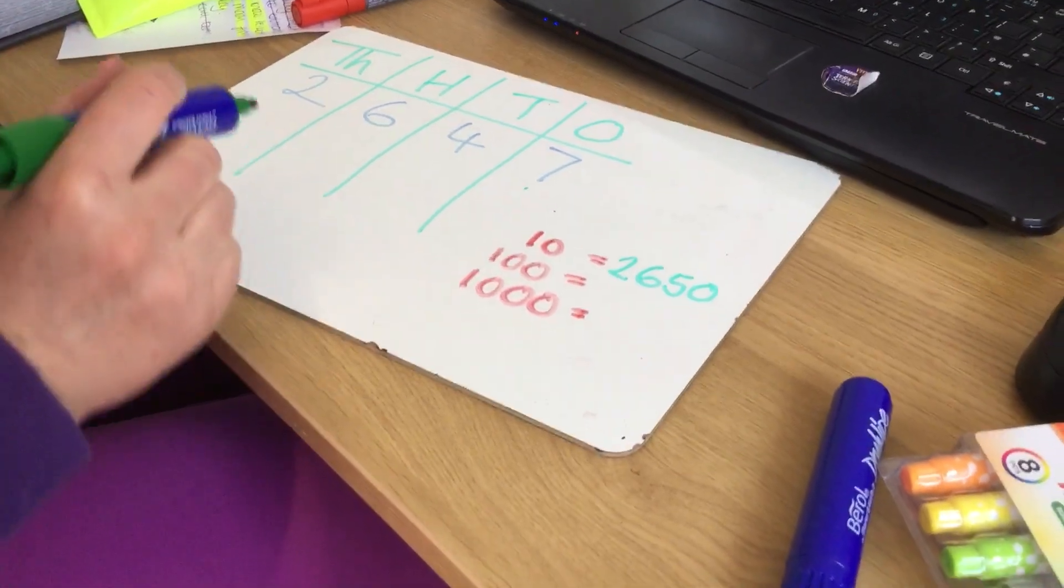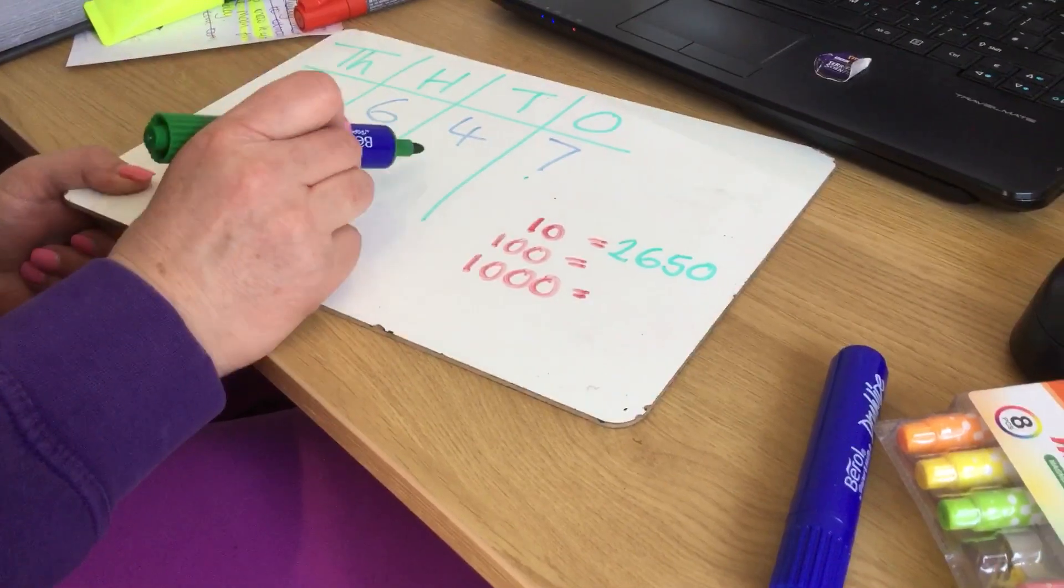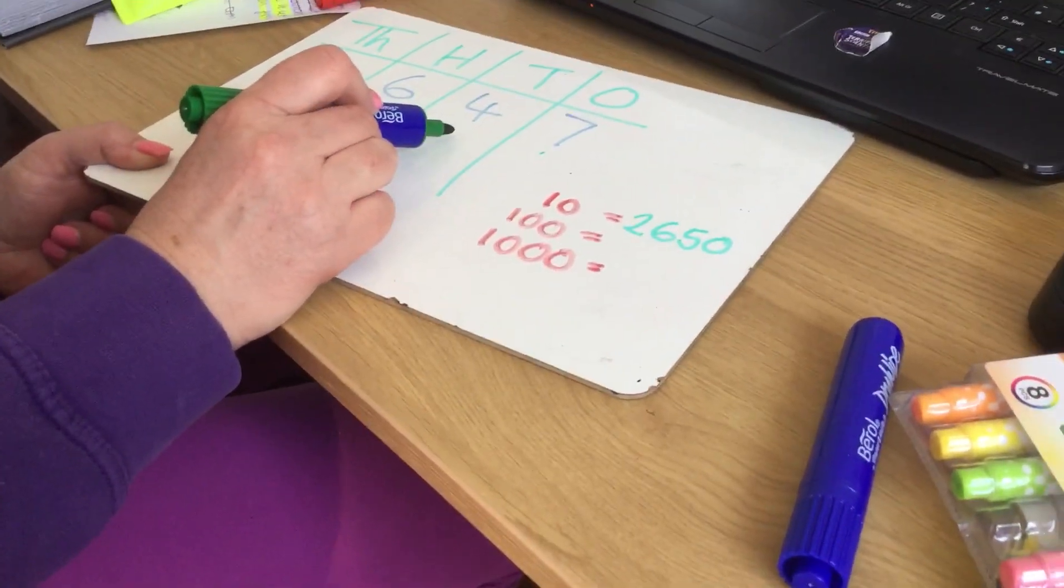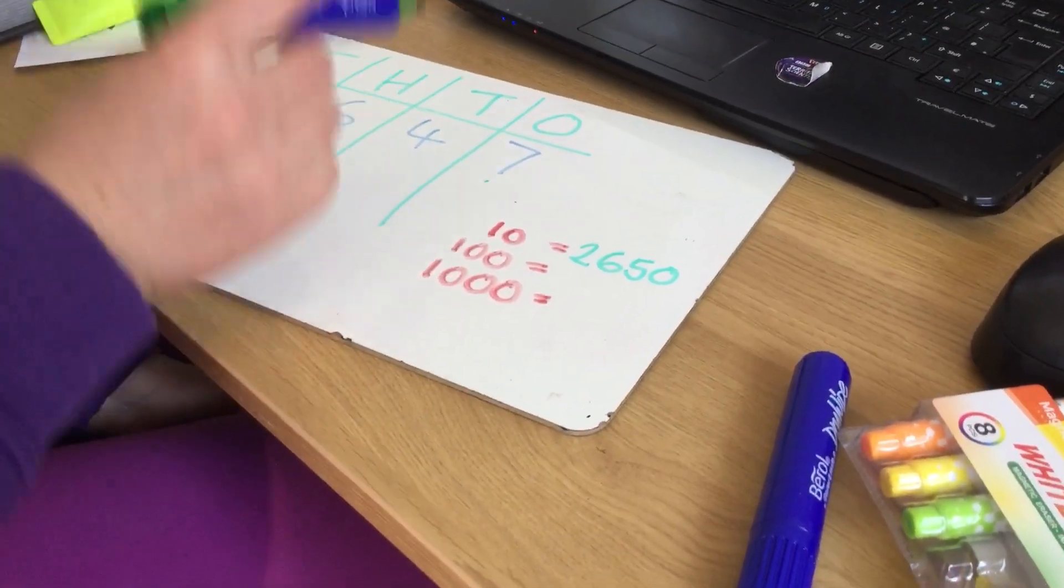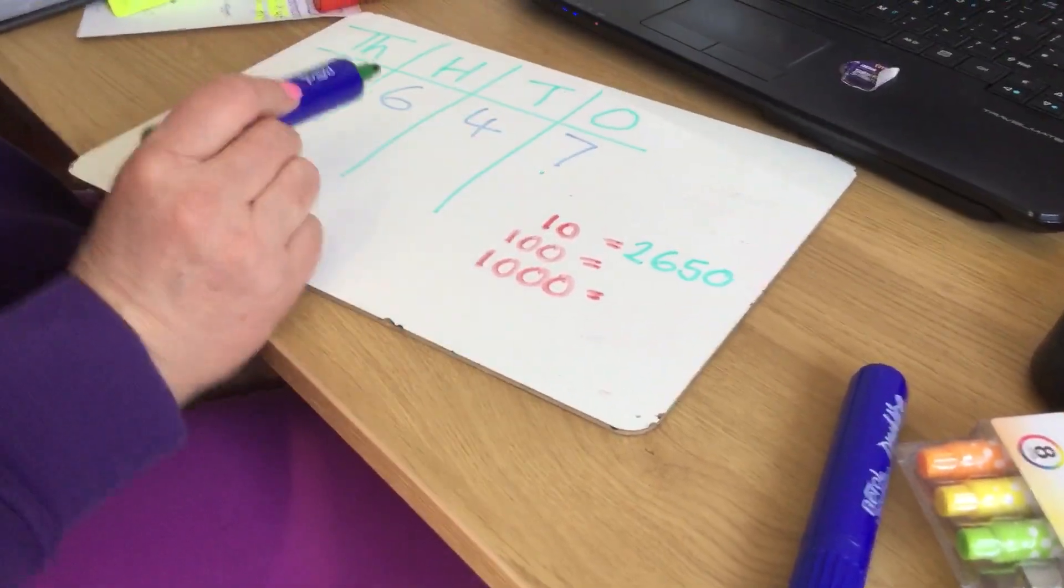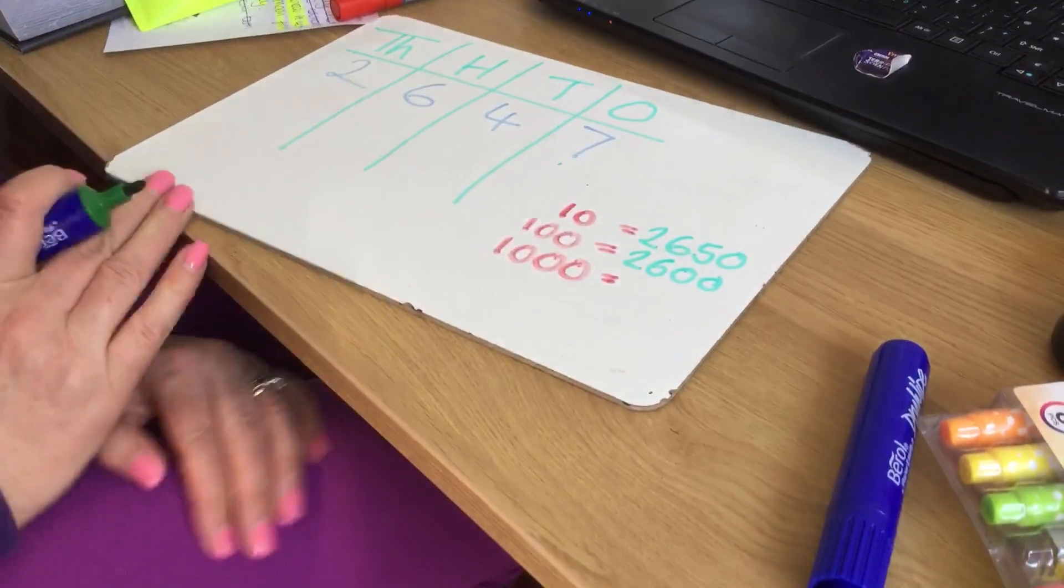If I'm rounding this number to the nearest 100, I look at my tens column. I'm focusing on my tens column, it's the one on the right. My number in my tens column is 4, therefore I'm rounding down. So 2,647 rounding to the nearest 100 is going to be 2,600.